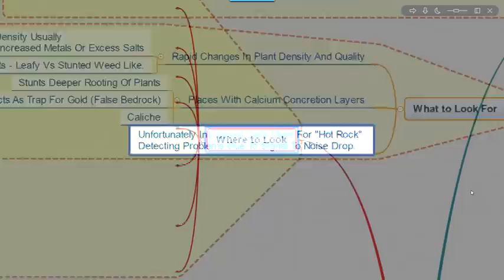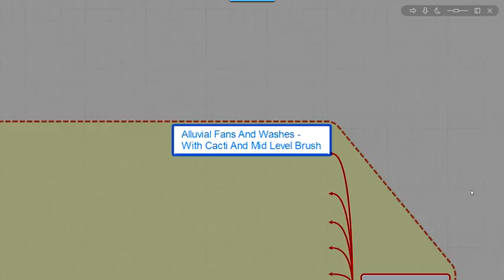So where do you look? Alluvial fans. This is where the washes flow out of the mountains and onto the desert floor. And they spread out in this wide V-shaped fan as they go downhill. And the slope decreases rapidly.